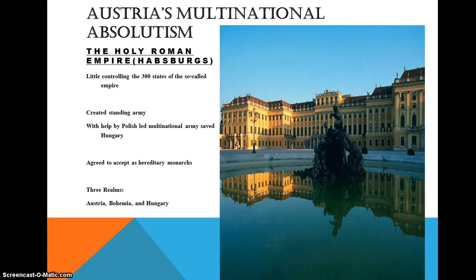We last left off talking about France as the example and inspiration for the concept of absolutism for monarchies. Austria had a more complicated time at trying to make this come into being. It was a multinational empire going by the Holy Roman Empire, attempting to be an empire on the model of ancient Rome, ruled by the Habsburgs.